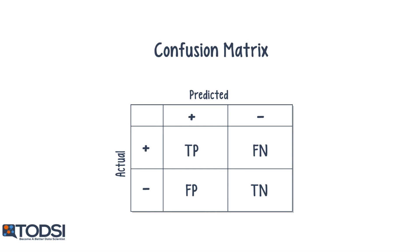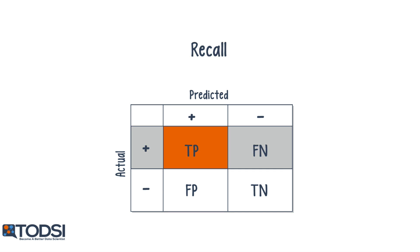Using this matrix, we can devise new measurements that overcome the issues of the error metric. We can do this by asking two related questions about the model's performance. We first look at the positives in the dataset and ask: what percentage of these positives was the model able to correctly identify? This metric is known as recall, expressed as the number of true positives divided by the total number of positives in the dataset.